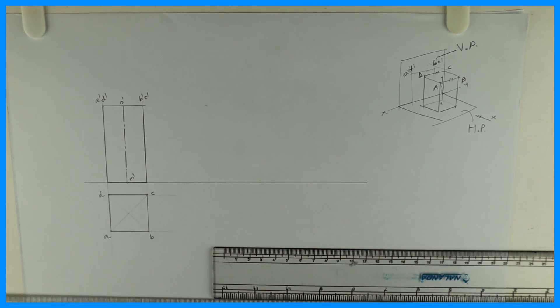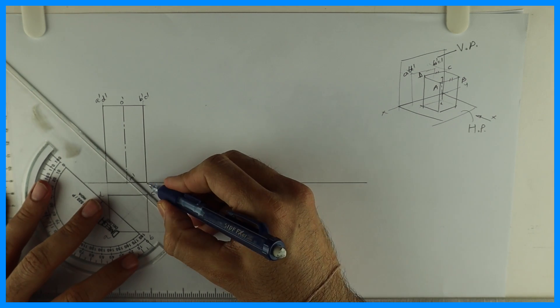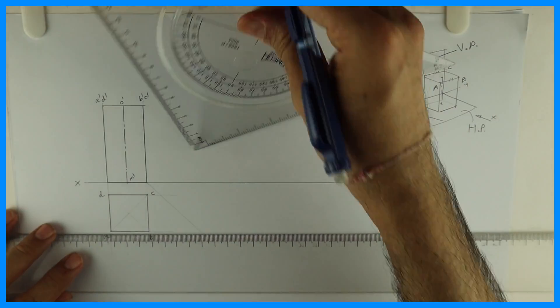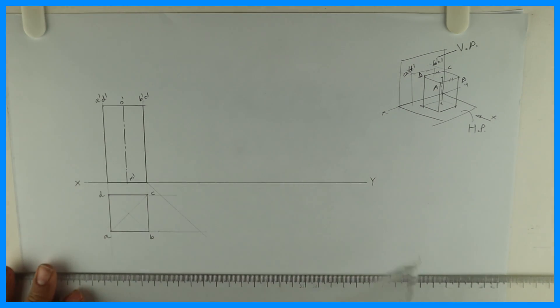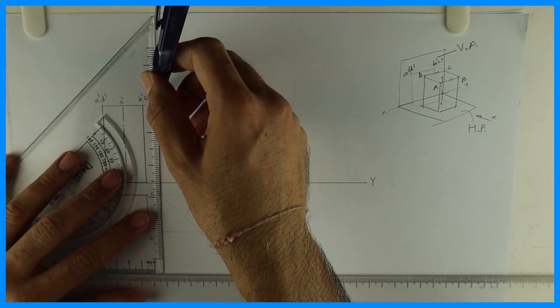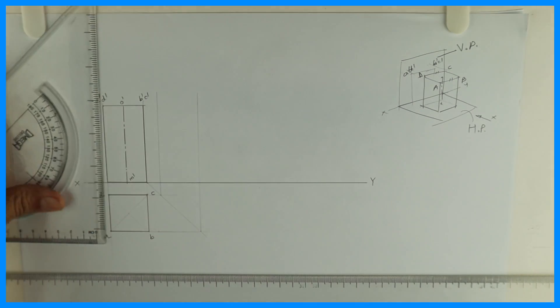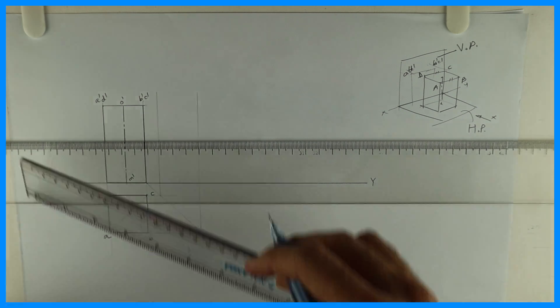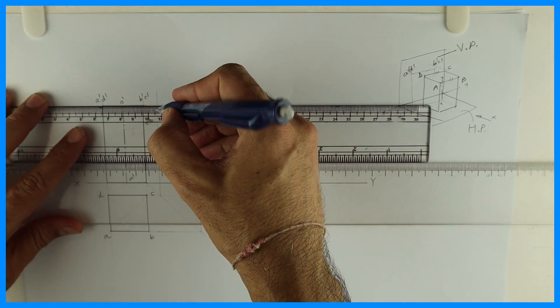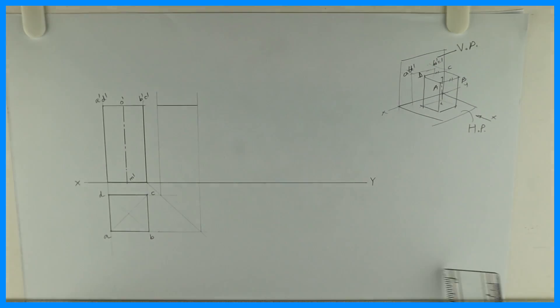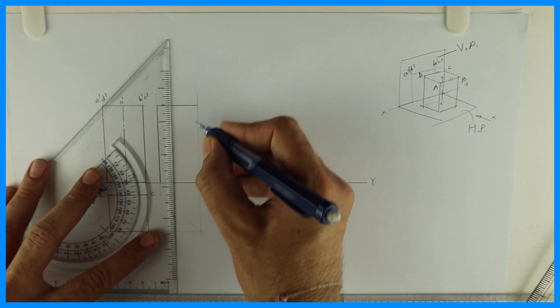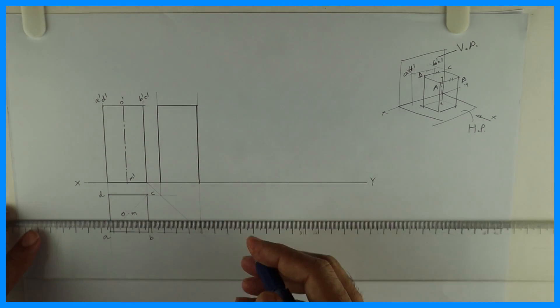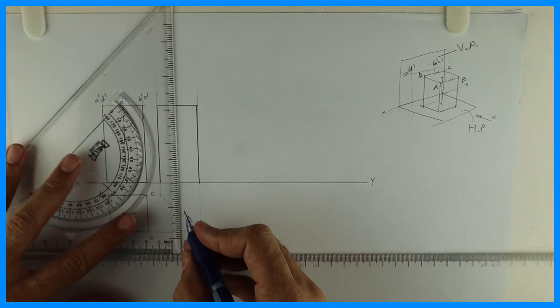Now we can draw side view also. So draw 45 degree. This is XY. Intersection of HP VP is XY. Project this. Wherever it will cut from there you go up. See this. This is side view. Always remember top view without dash, front view with dash and side view with double dash. If you see naming in side view, it will be double dash. This is OM in top view. I can extend this from your axis line in side view.